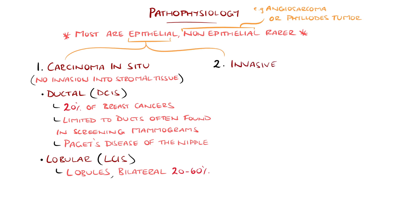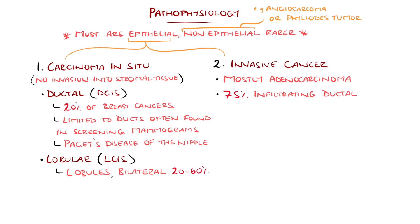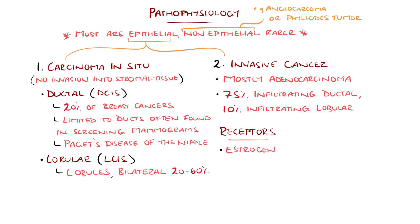The second main category of epithelial cancers is invasive cancer. This is primarily adenocarcinoma, with 75% being the infiltrating ductal histology and 10% of the remainder being infiltrating lobular. Importantly, epithelial cancers can express hormone receptors, such as estrogen or progesterone receptors. Most post-menopausal cases have estrogen receptor positivity — around 80%, while premenopausal cases are only around 20% positive.